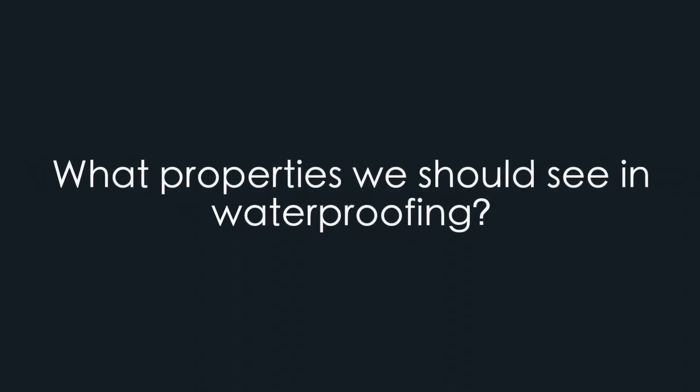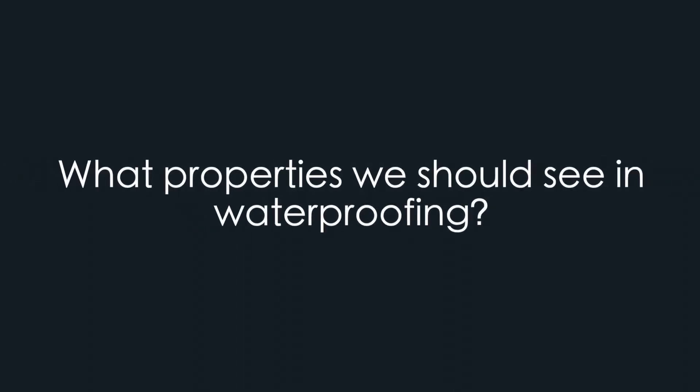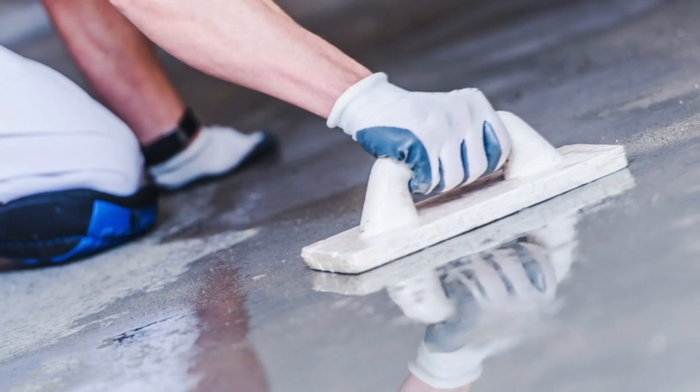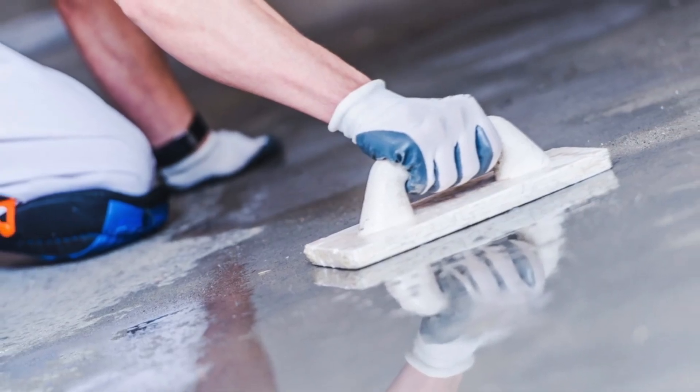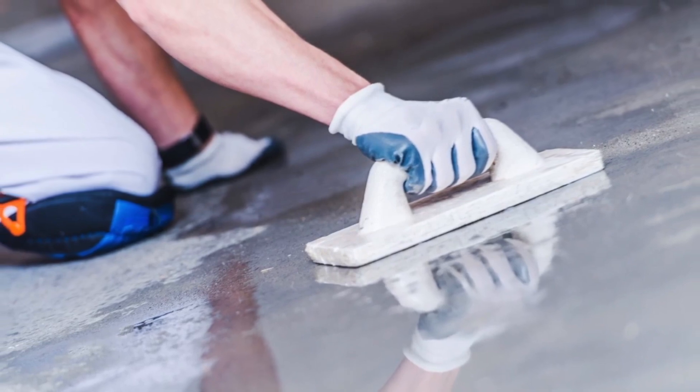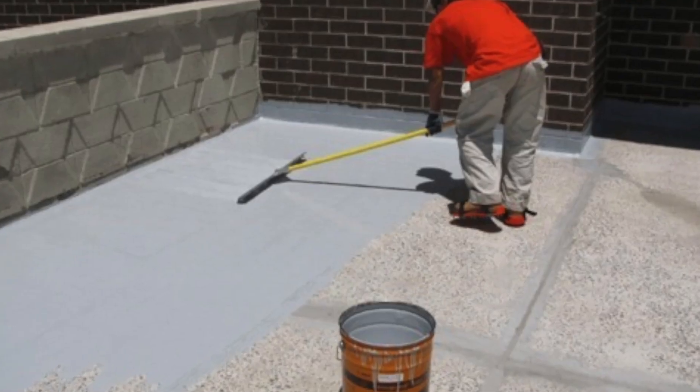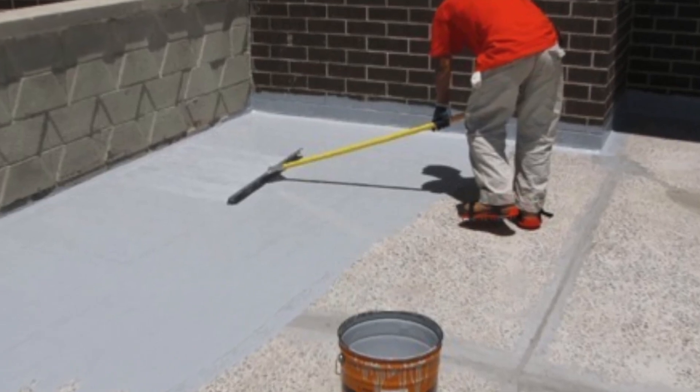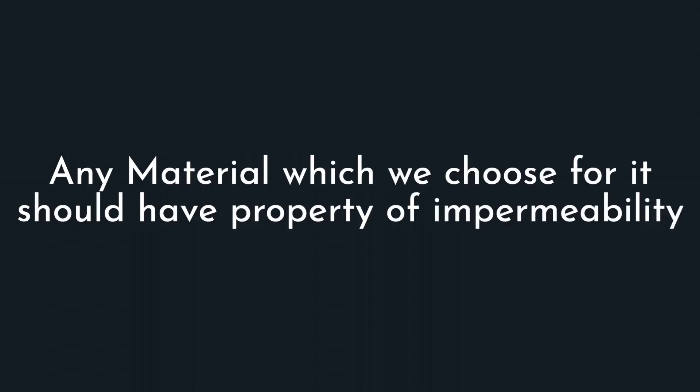What are the properties that we should look into before the selection of a waterproofing material? The first and most common thing we require from a waterproofing material is it should stop water — it should not be permeable to water. Any material that we choose should have the property of impermeability.